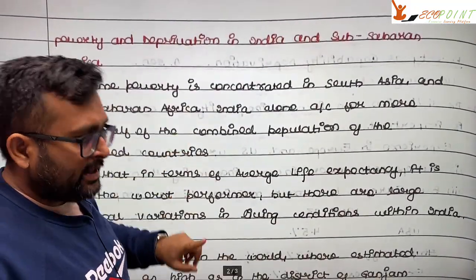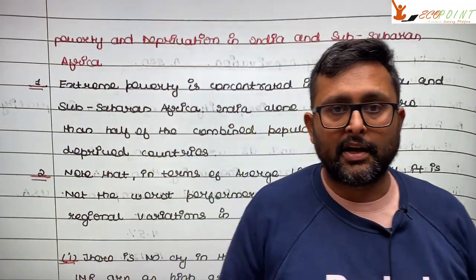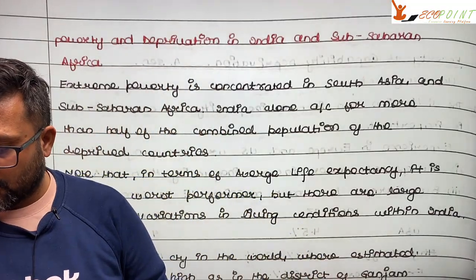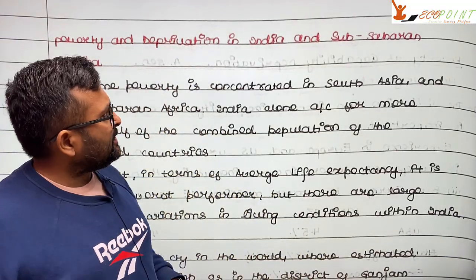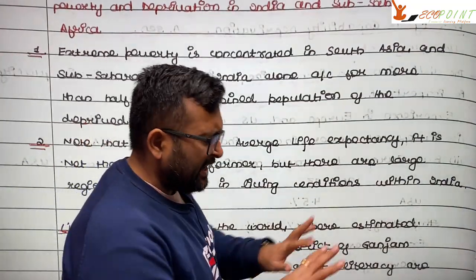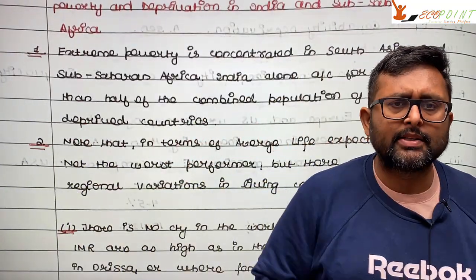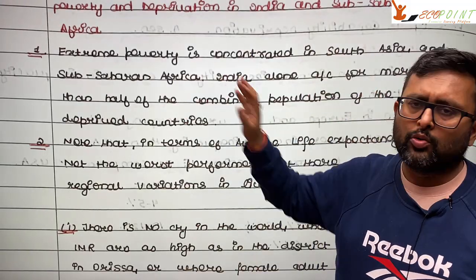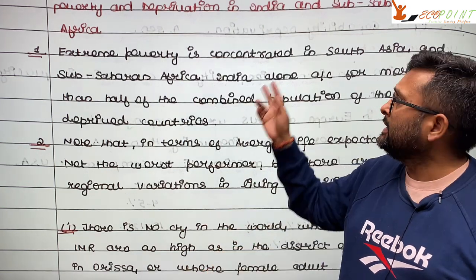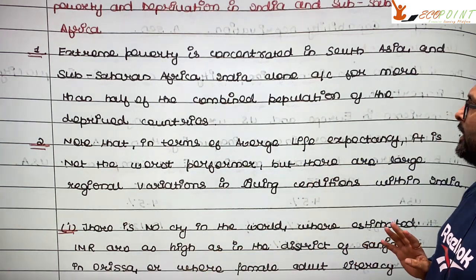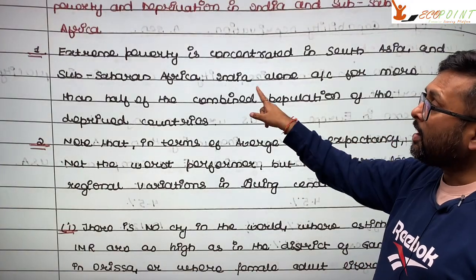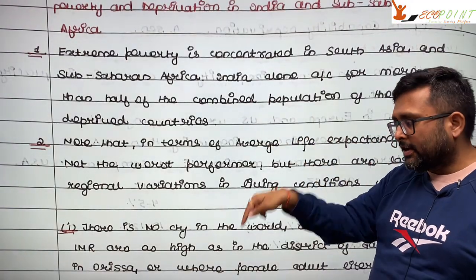Sen then gives the example of poverty deprivation in India and sub-Saharan Africa. He chose these two regions because extreme poverty is concentrated in South Asia and sub-Saharan Africa, and in India alone, more than half of the population of deprived countries is living.